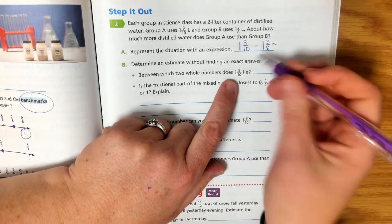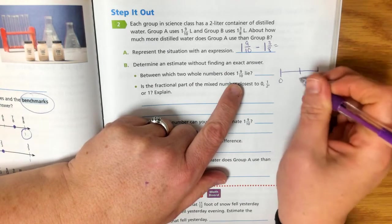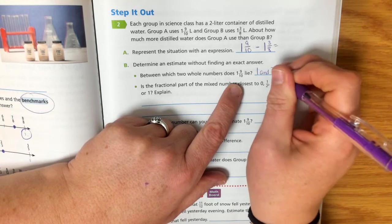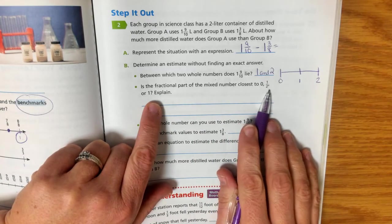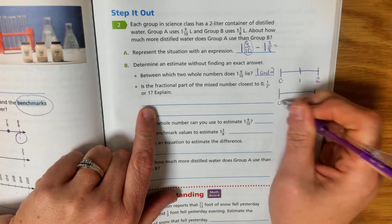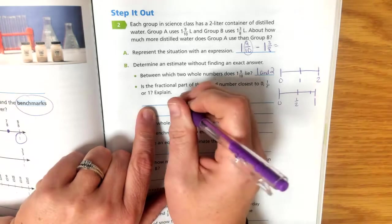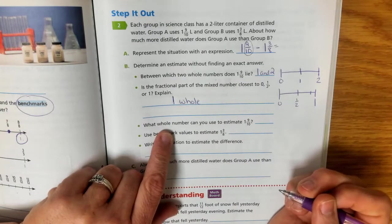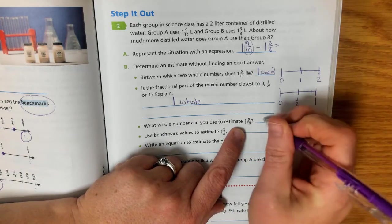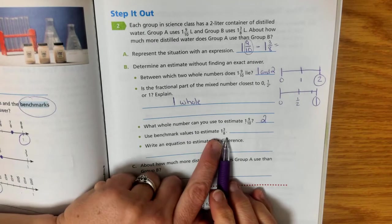If I look at this number, 1 and 9 tenths, which two whole numbers does it go in between? If I have a number line, 0, 1, and 2, right? It lies in between the 1 and the 2. So is the fractional part of the mixed number closer to 0, half, or 1 whole? So is this part, the 9 tenths, closer to 0, 1 half, or 1 whole? Well, if we break this up, it's going to be way over here, right? So it's going to be closer to 1 whole. So what whole number could we use to estimate 1 and 9 tenths? Well, this would be 1 whole, and 9 tenths is almost a 1 whole, so it would be closer to the 2.